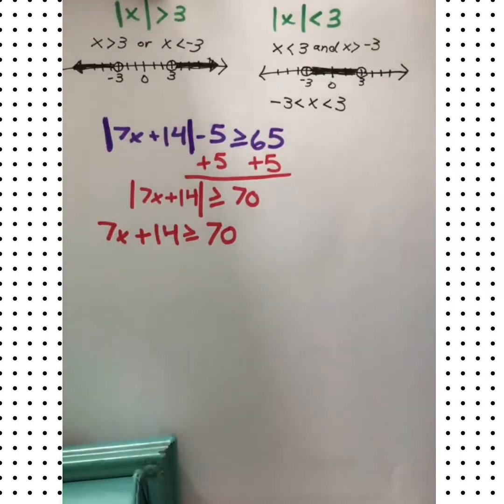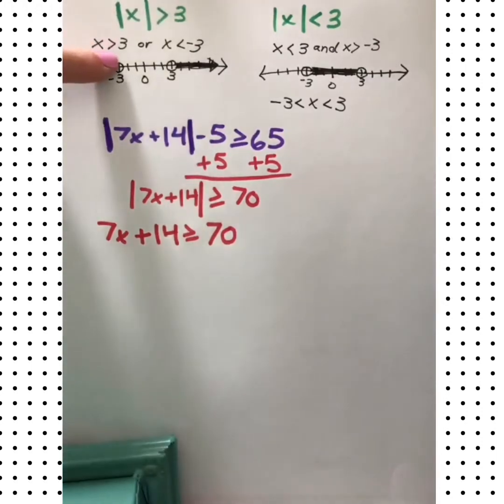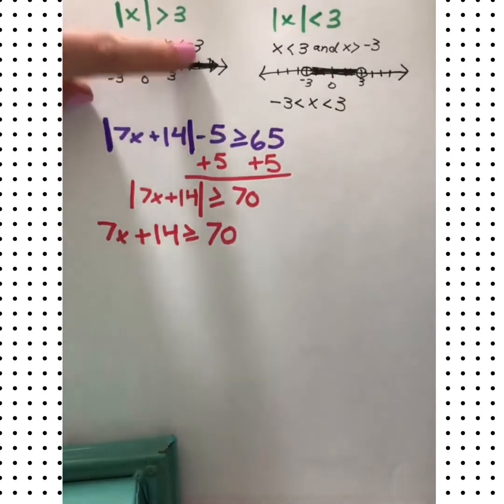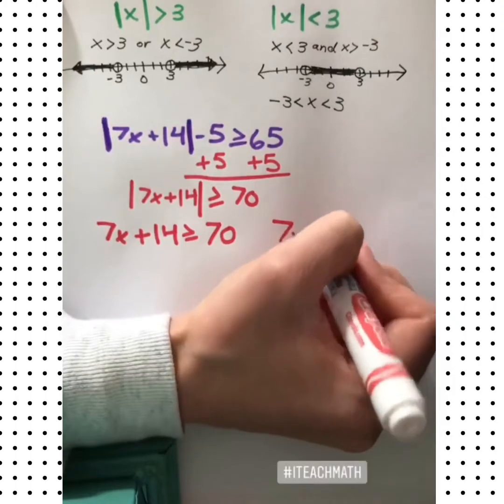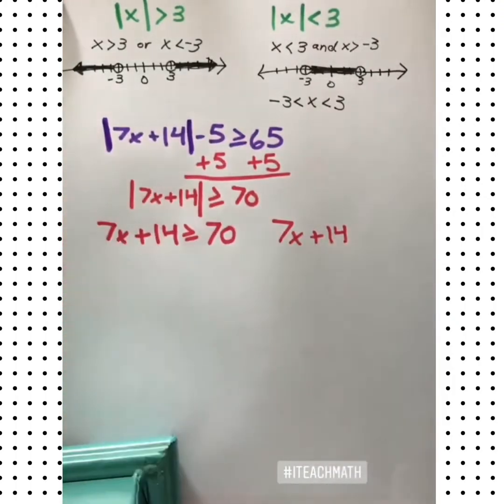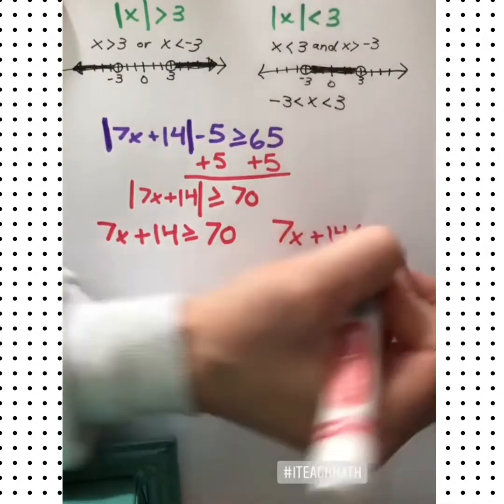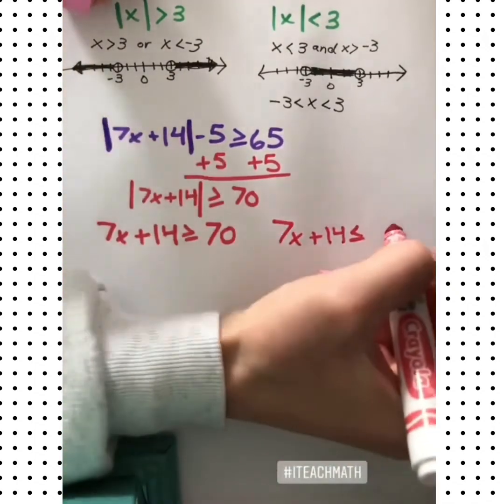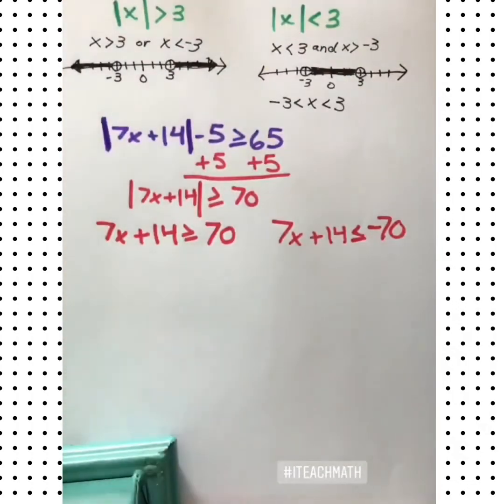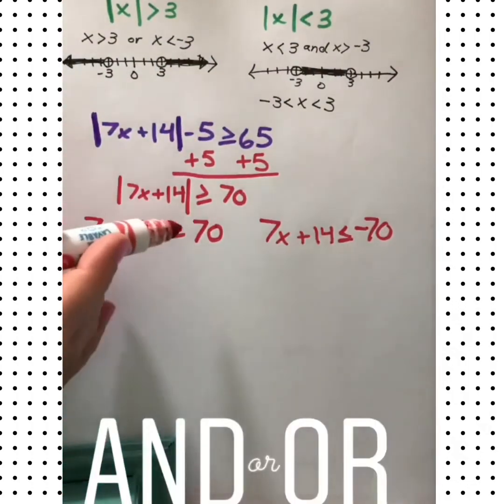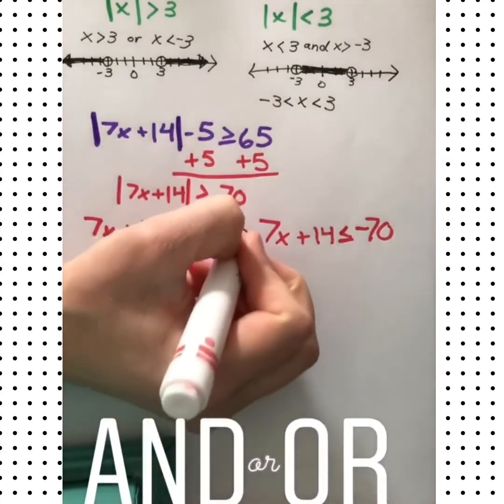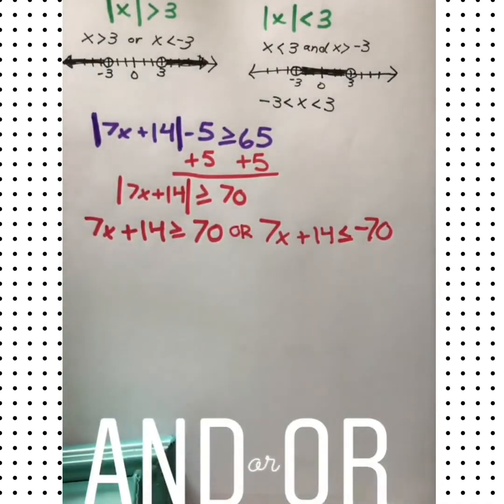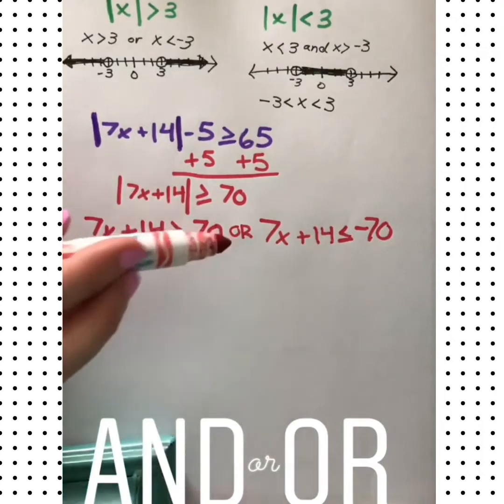Now let's refer back up here. When we started with a greater or greater than or equal to, we had to switch the second sign and switch the sign of the number. Okay, so we'll write 7x plus 14. Instead of greater than or equal to, we'll switch it to less than or equal to, and instead of a positive 70, we'll have a negative 70. Now think, can a number be greater than 70 and less than negative 70? No, so we want to write the word or. We don't want to say and because a number can't be both of those things. Or is important here. Now we'll solve each one.